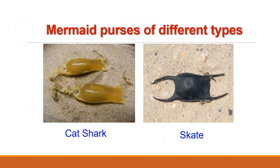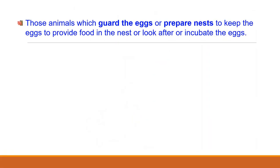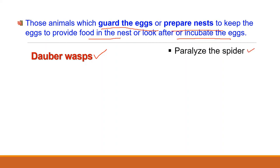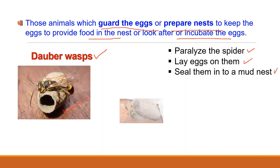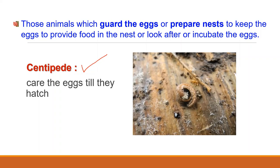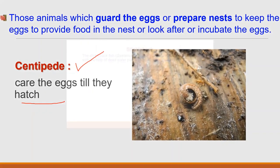In the case of the second group of animals, they either guard the eggs or prepare nests for the eggs, providing food in the nest or incubating the eggs. The nests may be built either by the male, the female, or by both. For example, the dauber wasp paralyzes spiders, and the female lays eggs on them and seals them in a tubular nest made of mud; on hatching, the larvae feed upon the spiders. In the same way, centipedes guard the eggs till they hatch.